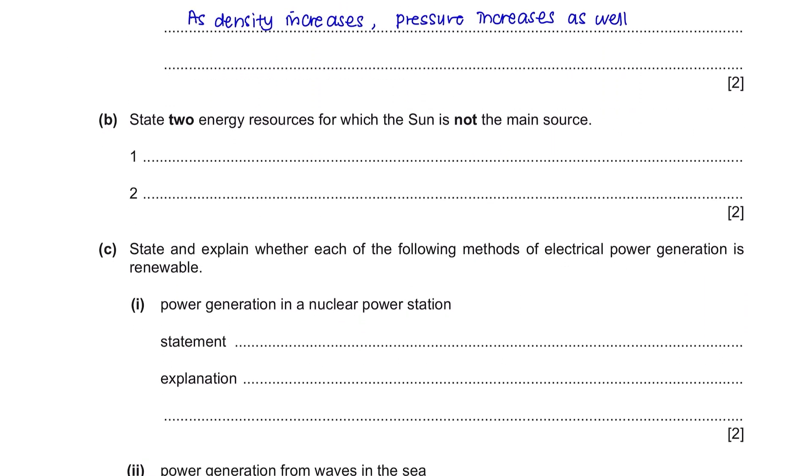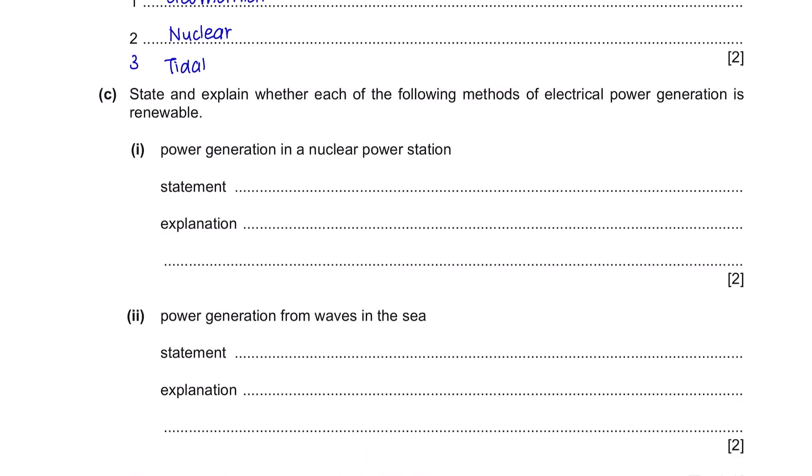Question B. State two energy resources for which the sun is not the main source. These are some forms of energy that do not come from the sun. Question C. State and explain whether each of the following methods of electrical power generation is renewable. Power generation in a nuclear power station. For statement, you should just mention whether it is renewable or non-renewable. Nuclear power stations come from nuclear energy and nuclear energy is non-renewable. The explanation is because one day all the nuclear fuel can be used up. Part 2. Power generation from waves in the sea. Waves in the sea is a renewable source. This is because waves will always continue being produced by wind.